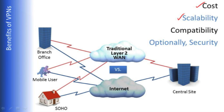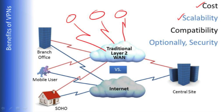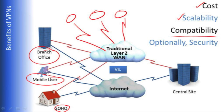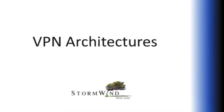How about scalability? As we add more sites that need connectivity, we go ahead and take advantage of VPN configurations so it scales nicely. Compatibility — this works with just about any type of environment you could imagine: a small office, home office, a mobile user, a branch office. And of course we can add security to this. It's technically optional, but we so often want to secure the information we're transmitting over the internet.